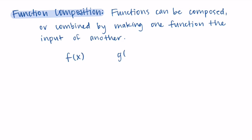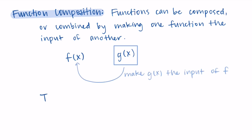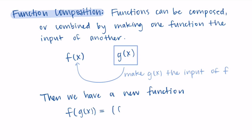If we have a function f and a function g, we're going to make g the input to f. When we do this we make a new function f of g of x. It can also be written as f circle g of x. Basically, the function g is on the inside — it takes in input x, then that output becomes the new input for f.